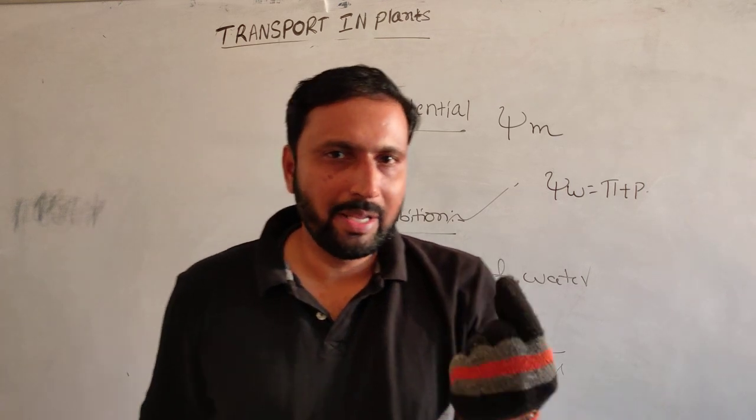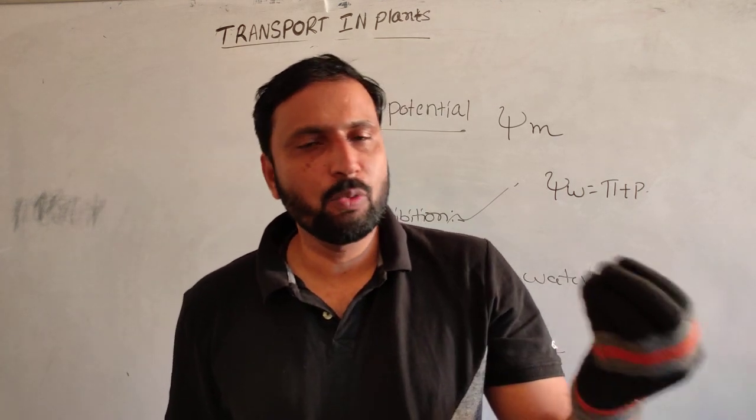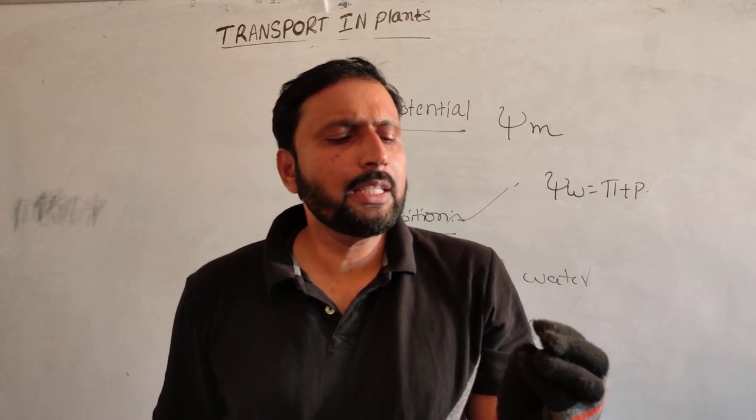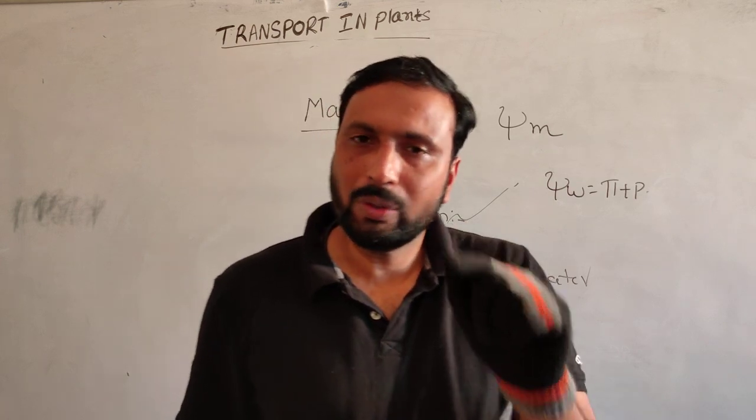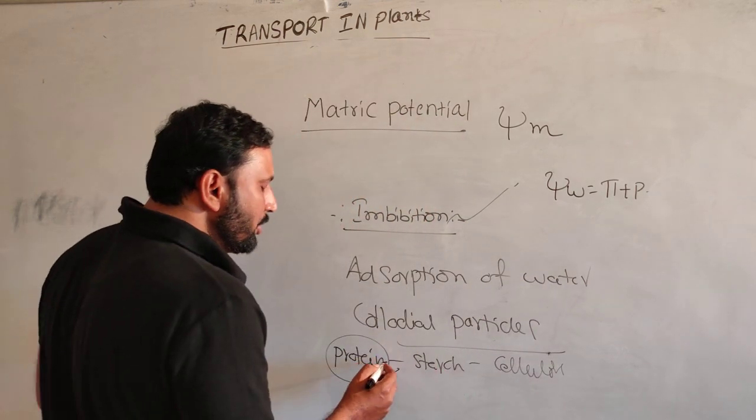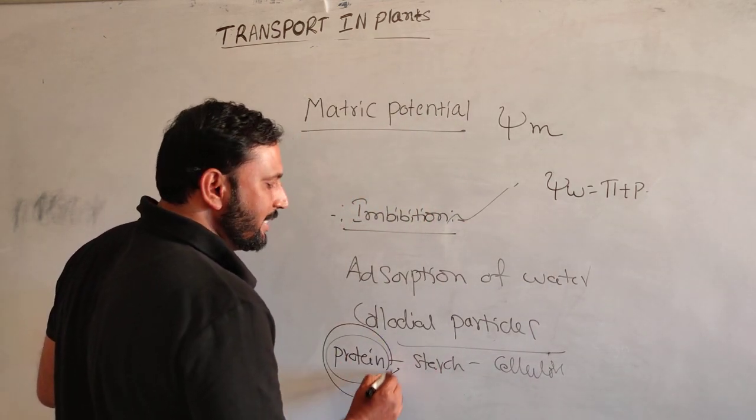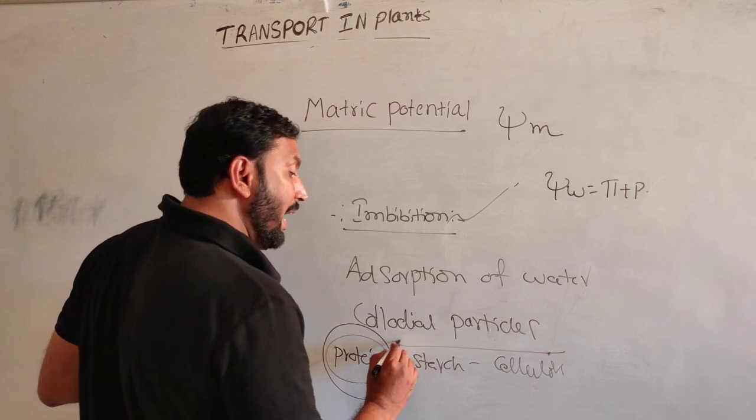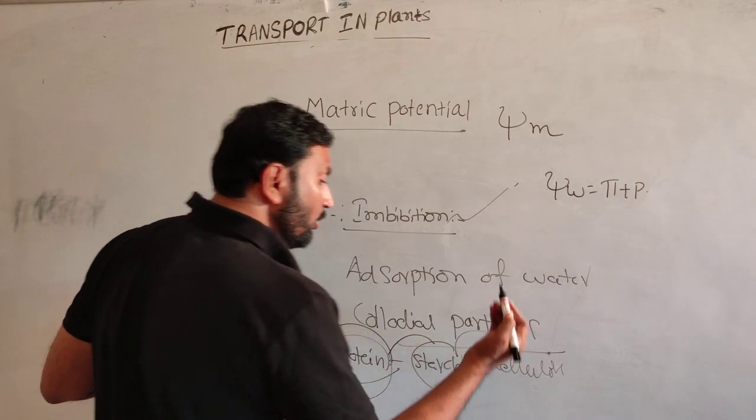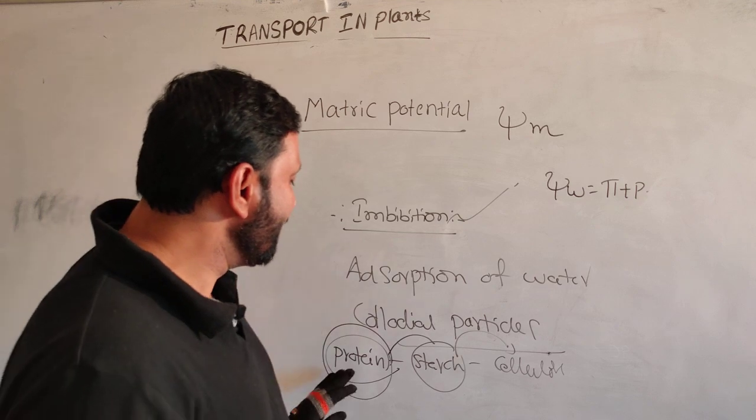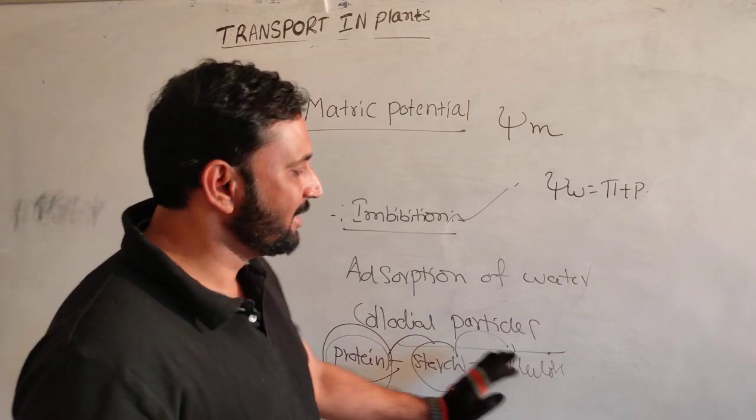Whereas starch grains, maybe rice grains, you place in water, less volume is increased. So that is why imbibition is more seen in protein seeds, in protein, than starch, than cellulose. More imbibition seen in protein than in starch, than in cellulose.